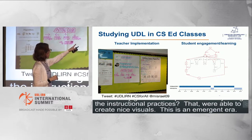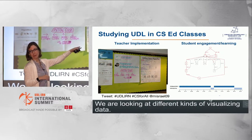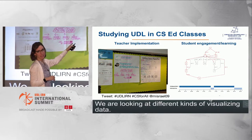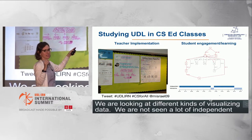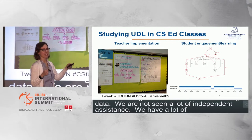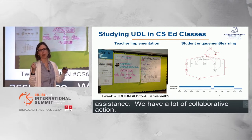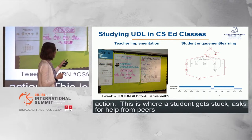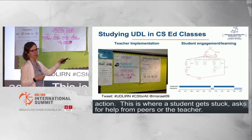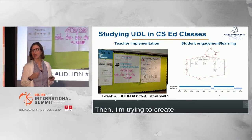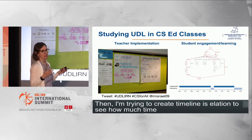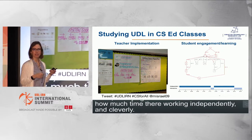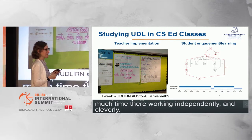We're able to create some nice visualizations — this is an emerging area. We're looking at directed graphs. In this particular directed graph, 0 to 12 represents a student working independently, and we're not seeing a lot of independent persistence. We have a whole lot of collaborative interactions — this is a student who gets stuck and immediately asks for help from peers or the teacher. I'm also trying to create timeline visualizations to see how much time they're working independently versus collaboratively, though data visualization is complicated and we're still working on it.